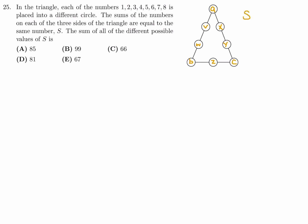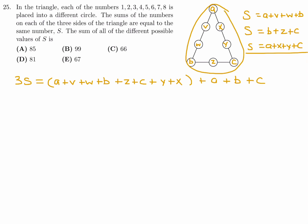So that sum is either A plus V plus W plus B. Or that sum is the bottom, which is B plus Z plus C. Or the sum is the other side, which is A plus X plus Y plus C. Now all of those are equal according to the question stem. Now let's add them up. Now if I add them up, I get 3S. Remember I'm adding these three. Let's write it over here. It gives me a little bit more space. 3S. And when we add it up, you get A plus V plus W plus B plus Z plus C plus Y plus X. And then you also get an additional A, an additional B, and an additional C. Like that.